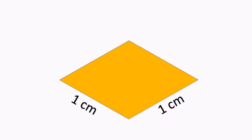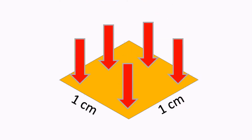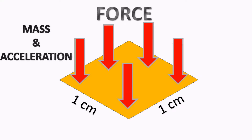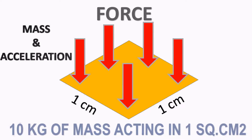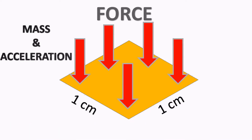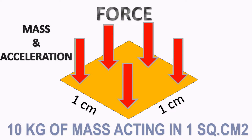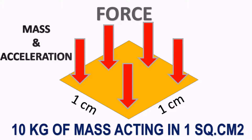We already know that pressure is a force acting per unit area. If you have a one square centimeter area and you apply 10 kg per centimeter square pressure, it means in that one square centimeter area you are giving 10 kg of force. That is the real meaning of pressure — force acting per unit area. So how are these devices going to measure the pressure?